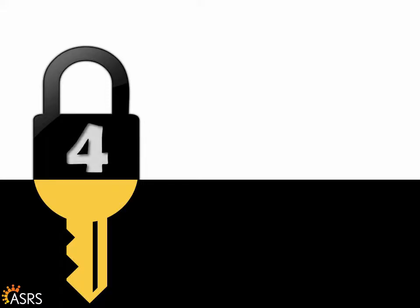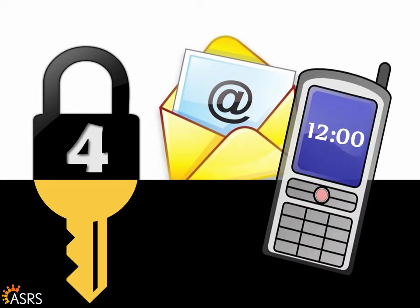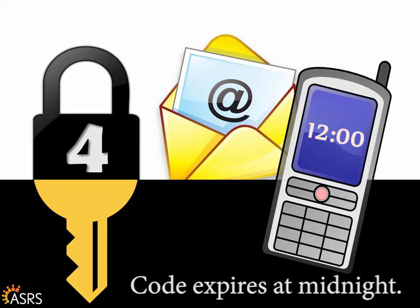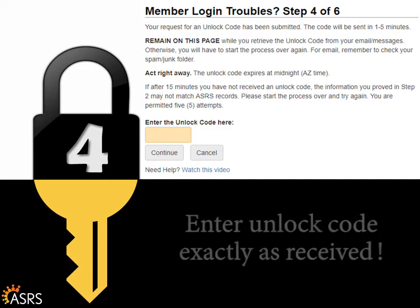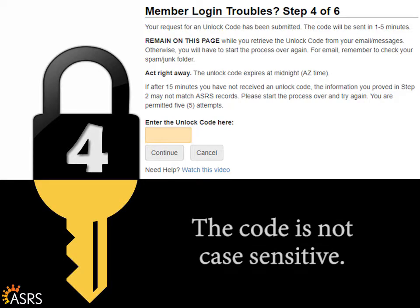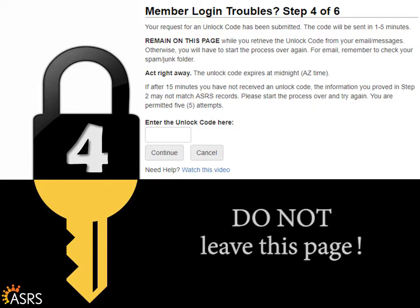The email or text you received will have an unlock code. This code will expire by midnight of the day you receive it. Enter the unlock code exactly as it was received into the field. You can copy and paste the unlock code from the email, but be careful not to include any additional spaces around it. If you choose to type the unlock code, it is not case sensitive. Be aware that if you leave this page, you will have to start the process over. You can minimize this screen and open a new window to check your email account.